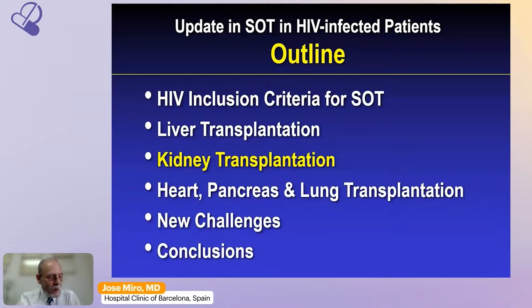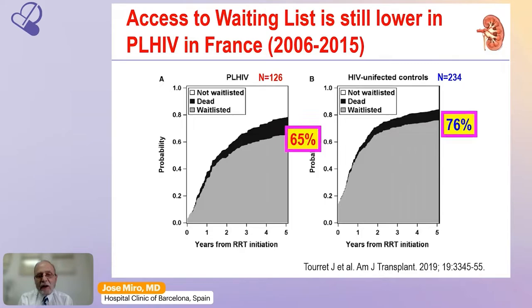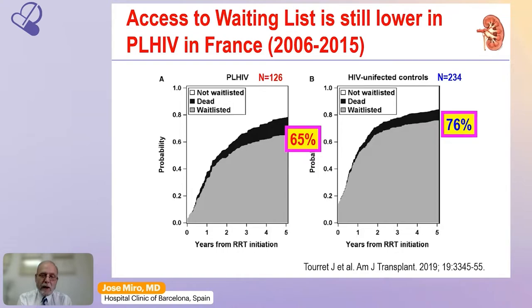Regarding kidney transplantation, there are two important issues to discuss. First, access to waiting lists is still lower in patients living with HIV: a French study showed that at five years, only 65% of HIV-positive dialysis patients became listed versus 76% of HIV-uninfected controls, with similar findings in Spain and the US. This is critical because mortality at five years is 79% lower after kidney transplantation compared with remaining on dialysis, making dialysis only a bridge to kidney transplantation.